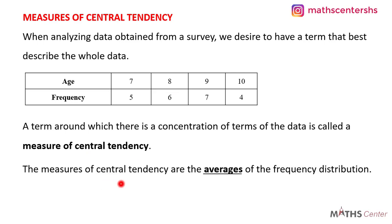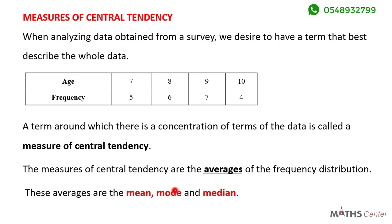The measures of central tendency are also known as the averages of the frequency distribution. In our lesson we are going to consider three of these averages: they are the mean, the mode, and the median. Remember, these averages are also known as measures of central tendency — a term around which there is a concentration of all the terms in the data.